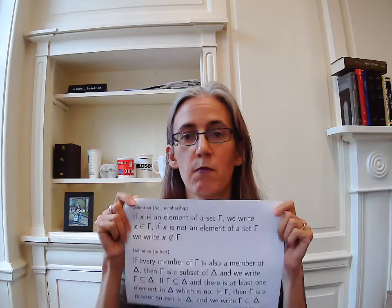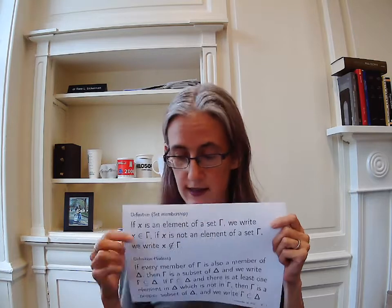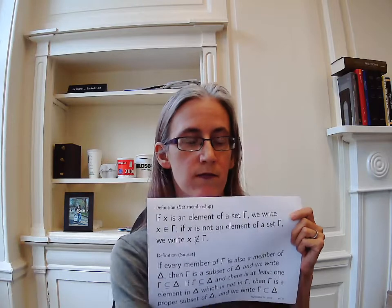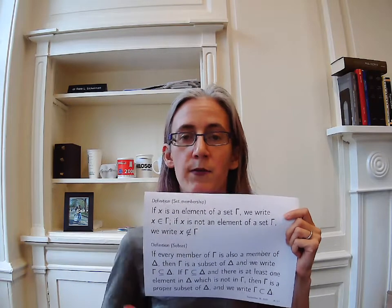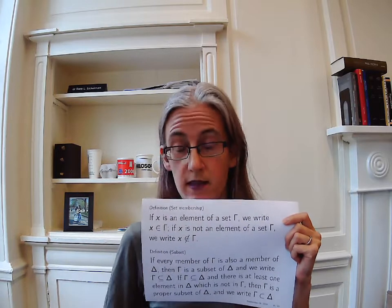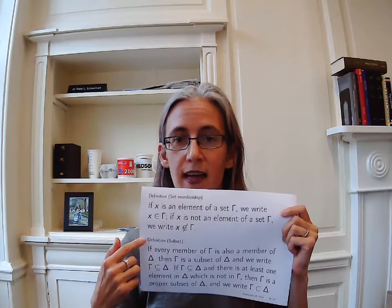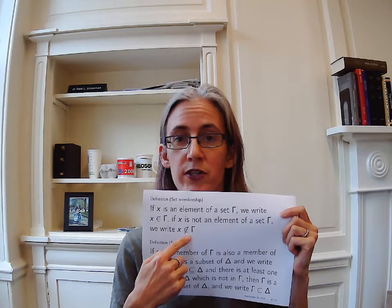So here we've got more notation. The first definition is the definition of set membership. If lowercase x, which is just standing for whatever object whatsoever — for instance, this marker — is an element of a set gamma (remember capital gamma from our notation video last time), perhaps the set that contains the orange marker and the yellow marker, then we will write that x is a member of gamma. So this is the membership relation. If it's not, then we will write that membership relation with a slash through it.